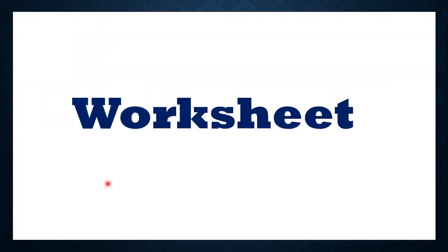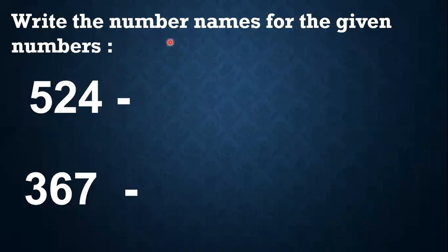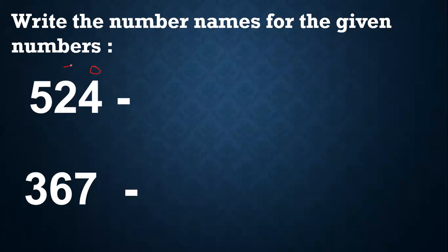Let's see the worksheet. The worksheet says: write the number names for the given numbers. Here we have 524. We know that 4 is in the 1s place, 2 is in the 10s place, and 5 is in the 100s place. We always start from the hundreds place — so 5, then the place where it is: 500, and we read 10s and 1s together: 24. So 524.